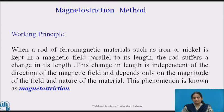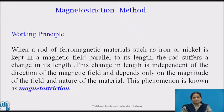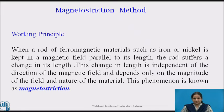Joule discovered the phenomenon of magnetostriction in 1847. The working principle of this method: when a rod of ferromagnetic material such as iron or nickel is kept in a magnetic field parallel to its length, the rod suffers a change in its length. This change in length is independent of the direction of the magnetic field and depends only on the magnitude of the field and the nature of the material. This phenomenon is known as magnetostriction.